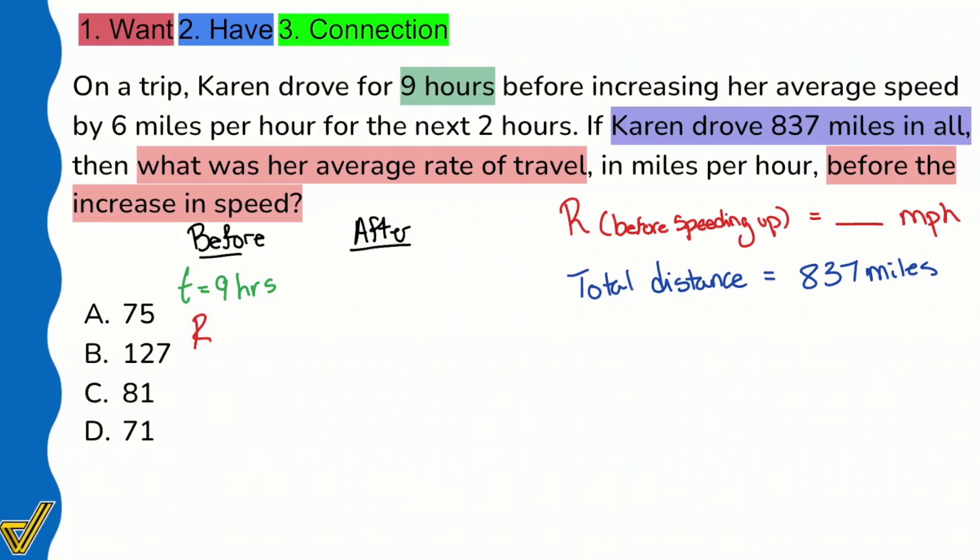After - I'll highlight this in purple - we see she increased her average speed by six miles per hour for the next two hours. So after, the time period was two hours and the rate, well the rate before was just going to be R.